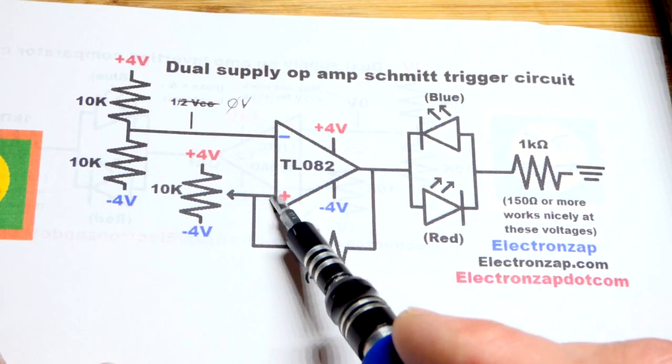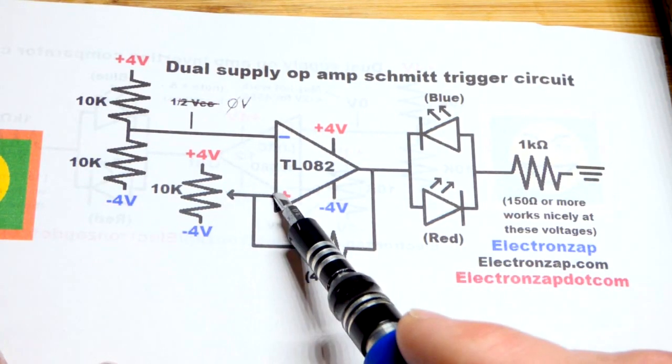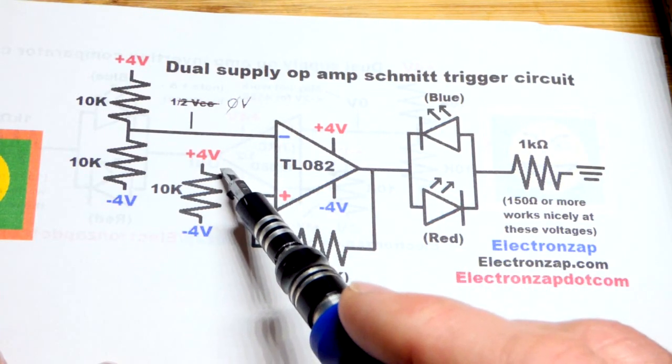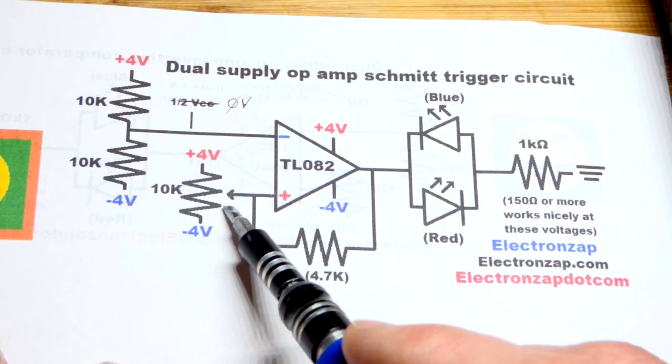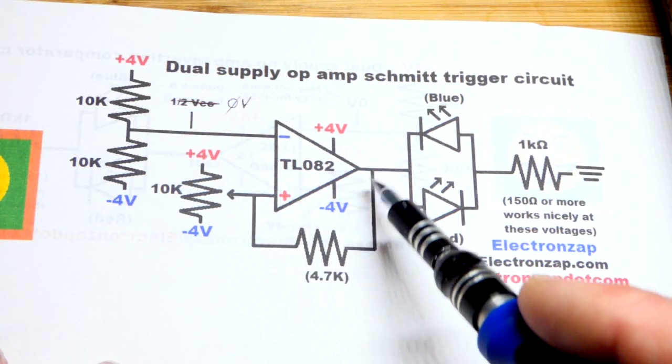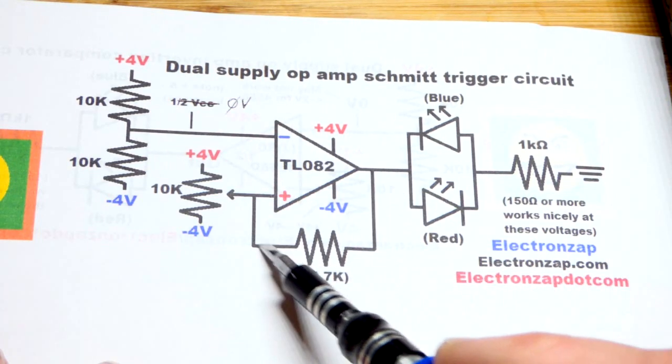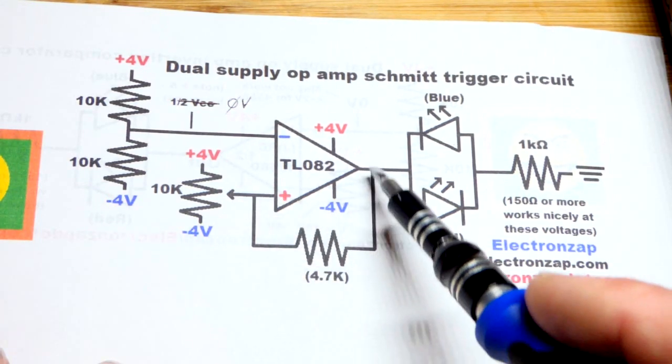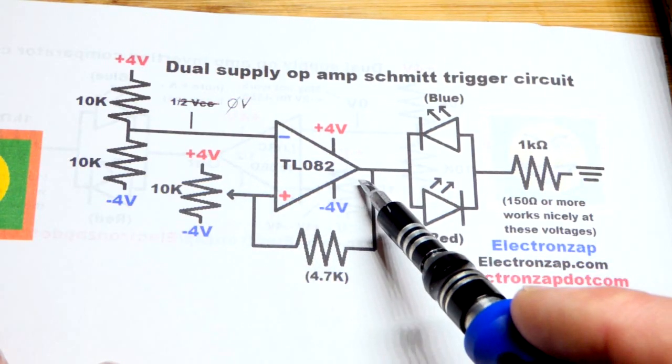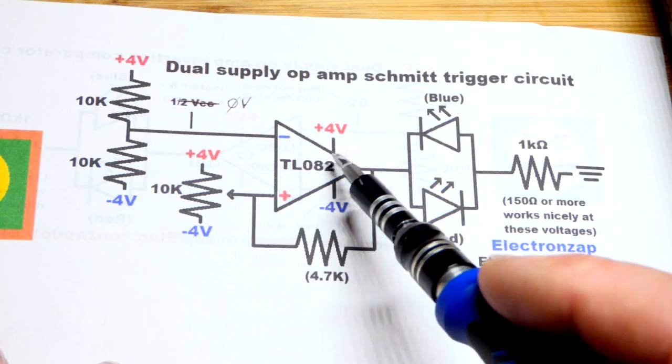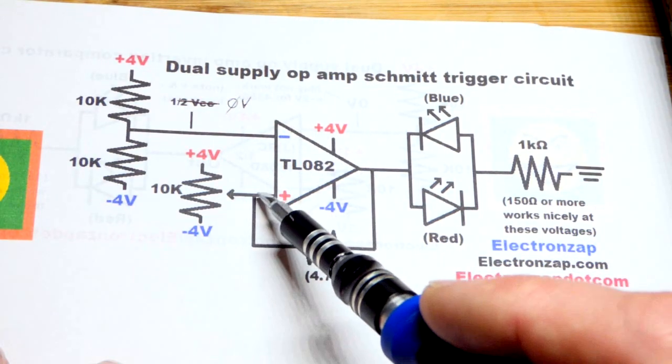When the signal to the non-inverting input gets higher than zero volts, we're going to have a high output. Lower than halfway, we're going to get a low output. The thing is, you can see at the output here we have a resistor coming back that's going to help hold it in the position high or low that it already is in.